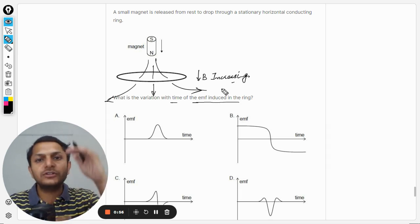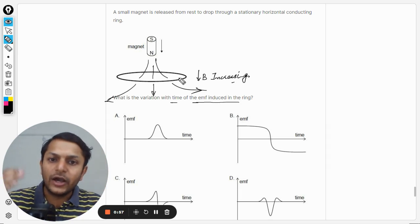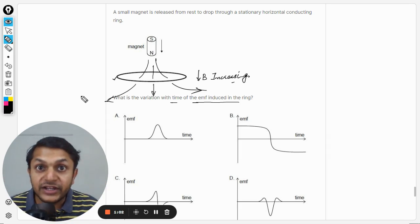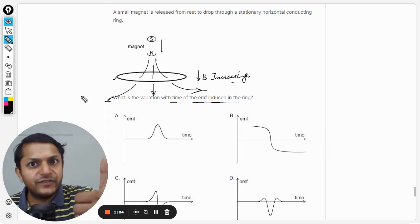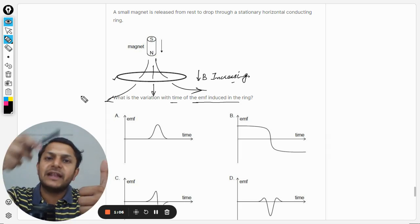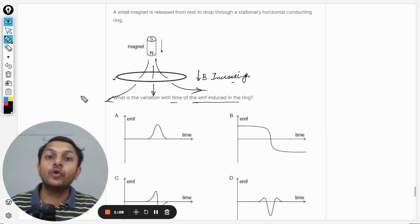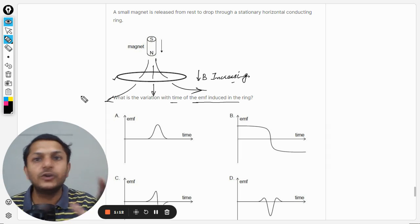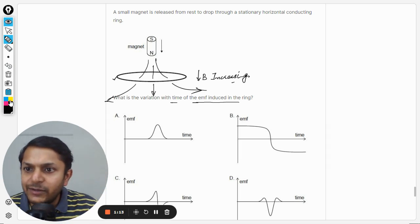Why is it increasing? Because the magnet is coming near to it. Now if that is increasing, the ring will say that no, I do not want it to be increased. So it will create a current which will create a magnetic field which is going to oppose this magnetic field because it does not want the overall magnetic field to increase.